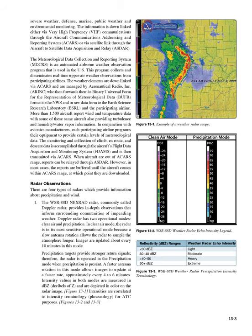The Meteorological Data Collection and Reporting System (MDCRS) is an automated airborne weather observation program used in the U.S. This program collects and disseminates real-time upper air weather observations from participating airlines. The weather elements are downlinked via ACARS and managed by Aeronautical Radio Incorporated (ARINC), who forwards them in BUFR format to the NWS and in raw data form to the Earth Science Research Laboratory (ESRL). More than 1,500 aircraft report wind and temperature data, with some also providing turbulence and humidity/water vapor information. When aircraft are out of ACARS range, reports can be relayed through ASDAR or buffered until the aircraft comes within ACARS range.